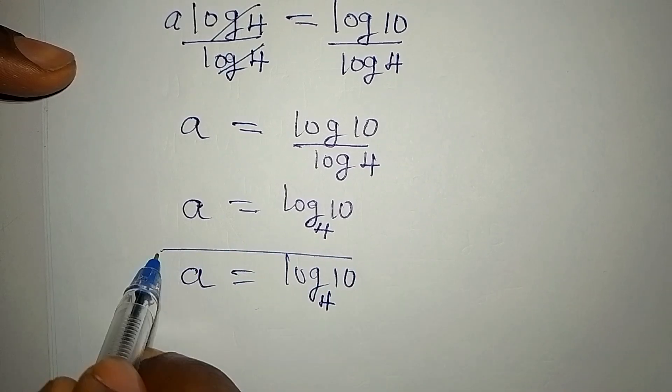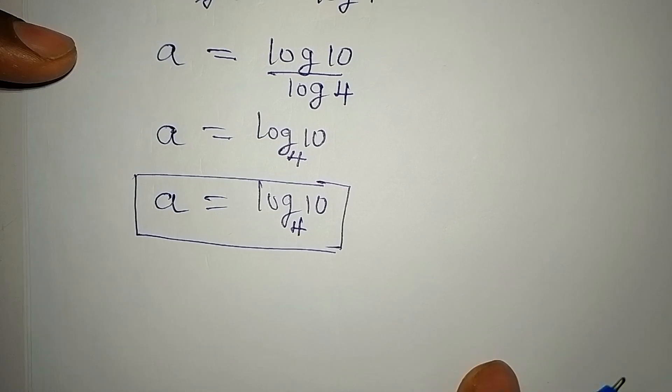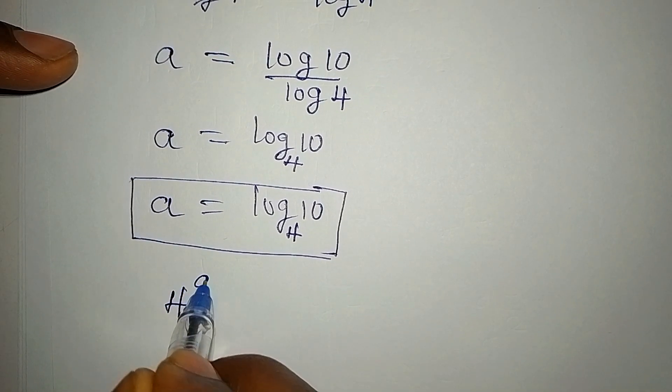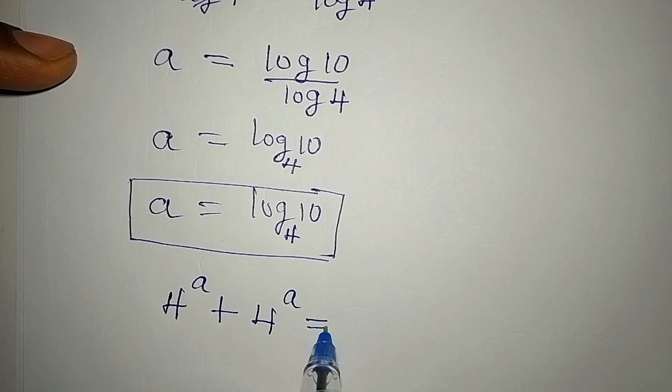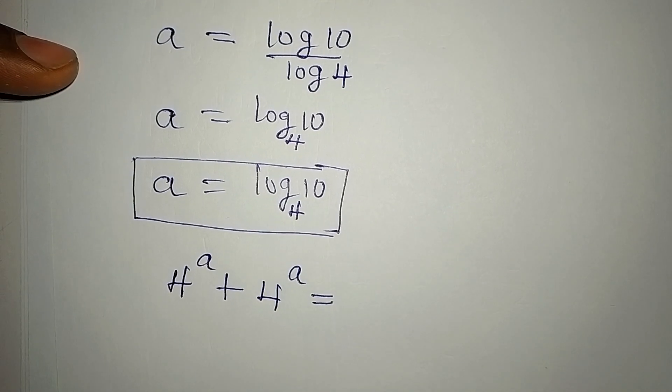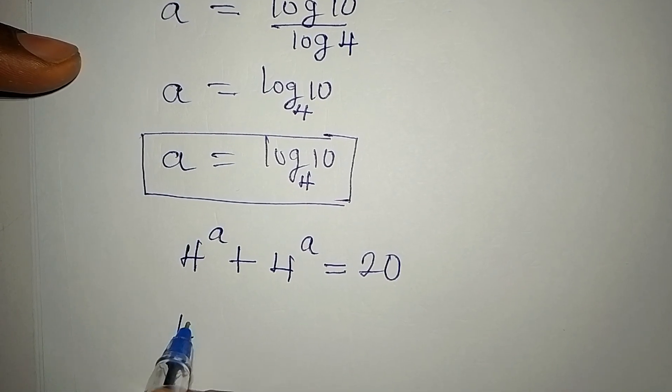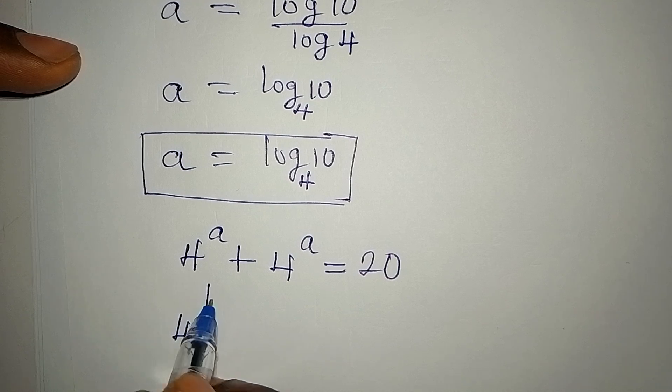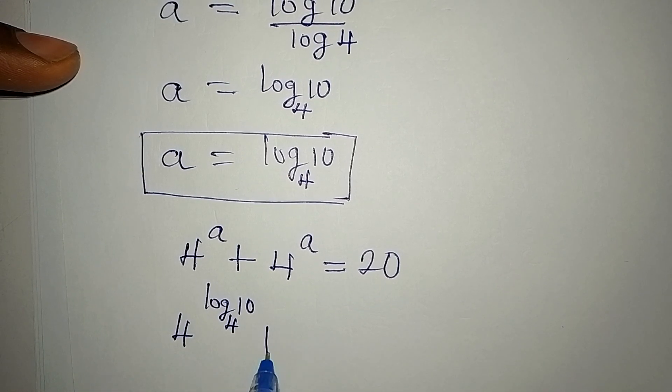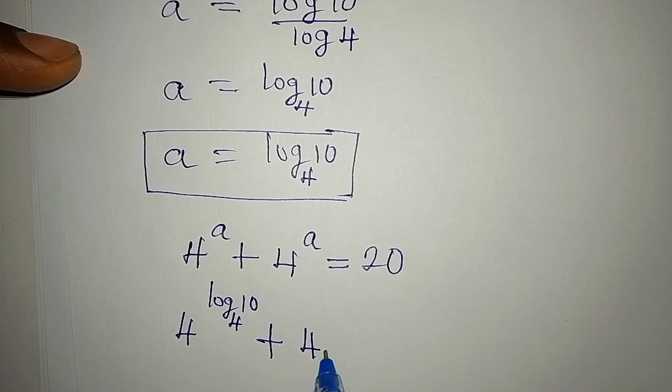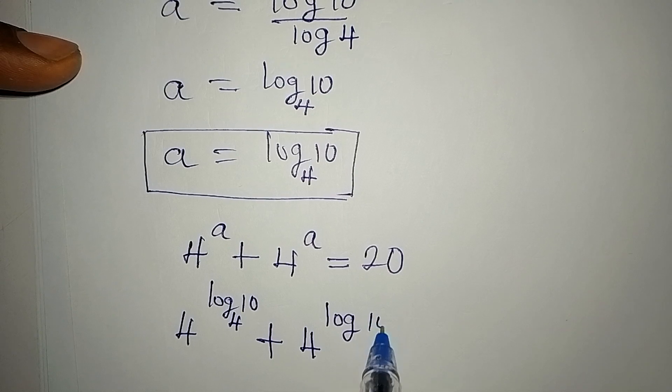And like I always do, I am going to confirm that our value of a is correct. The original equation is 4 to the power of a plus 4 to the power of a equals 20. In place of a, I am going to write 4 to the power of log 10 to base 4, then plus 4 again to the power of log 10 to base 4.